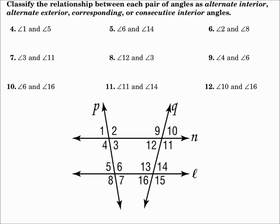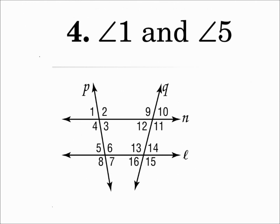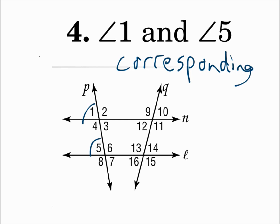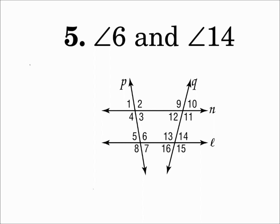Classify the relationship between each pair of angles as alternate interior, alternate exterior, corresponding, or consecutive interior. Number 4: angle 1 and angle 5 — those are both in the top left of their set of angles. When they're in the same position, they're corresponding angles. Number 5: angle 6 and angle 14 — those are on transversal L, and in their group they're each in the top right. When they're in the same position, they're corresponding angles.